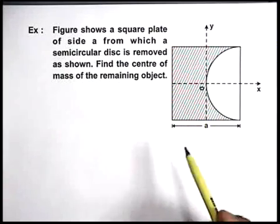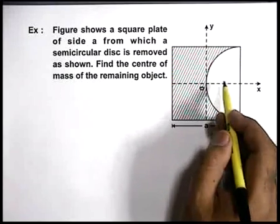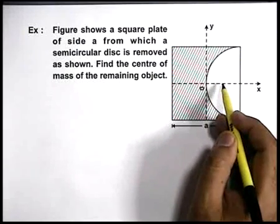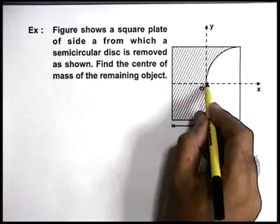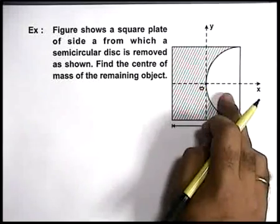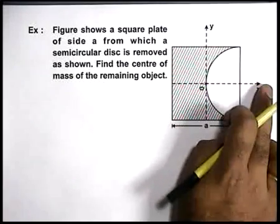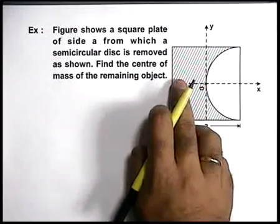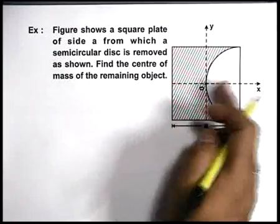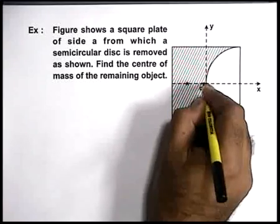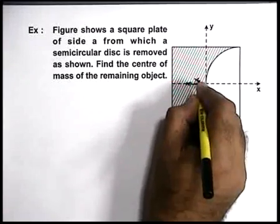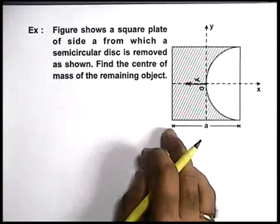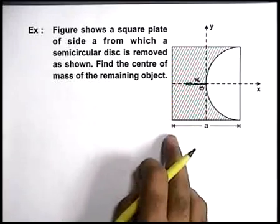We can directly state, when the disc was present, this half disc was present, the centre of mass would be located at O. If from right side, a semi-circular part is removed, on the left side mass is more than that of right part, so centre of mass will be displaced to the left, say by a distance x. And we are required to find the value of x.